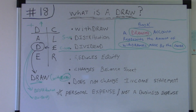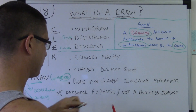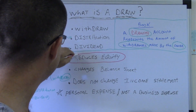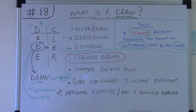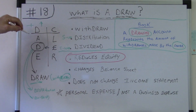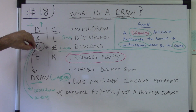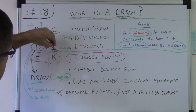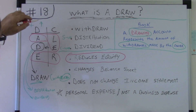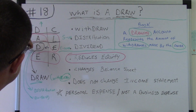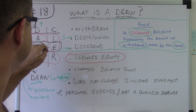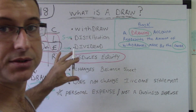Now for the crux of it: what is a draw? It reduces equity. If you look at the DC ALER framework, this side is the income statement and this side is the balance sheet — here's equity, and here's the draw. The draw, distribution, dividend, or withdrawal — it reduces equity. That's what it does.